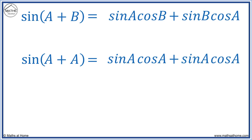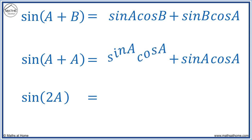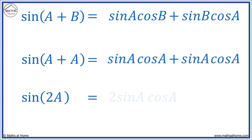Sine(a + a) is the same as sine(2a). We have sine(a)cos(a) plus sine(a)cos(a), which equals 2·sine(a)cos(a). This is the double angle formula for sine.